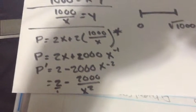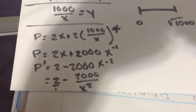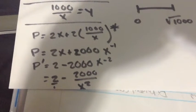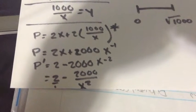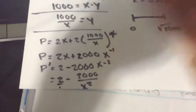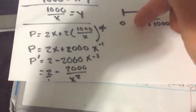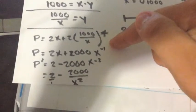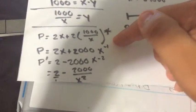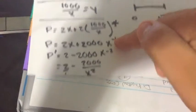So 2x plus 2000 x to the minus 1. I put negative 1 because taking my derivative would be easier. Or at least for me, it would be kind of clearer.